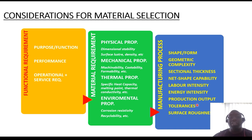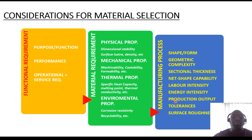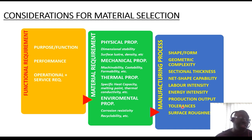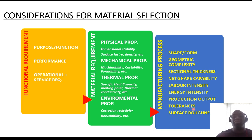Energy intensity is dictated by the material's property to deform — the more malleable the material, the lower the energy requirement. Production output is governed by the quantity of materials you intend to produce: whether you're looking at manufacturing one unit, ten, a thousand, a million, or ten million — that will be defined by the material and processes required. Other factors that come into play include component tolerance — how accurately can the process achieve those tolerances as specified by your design?